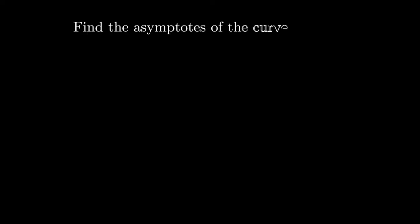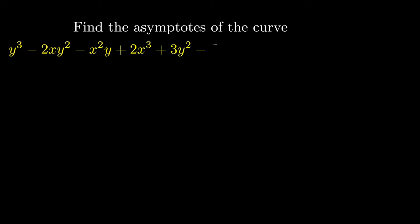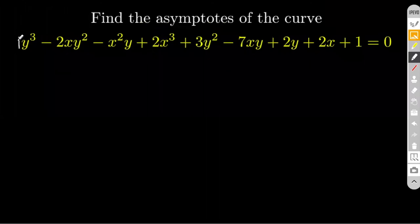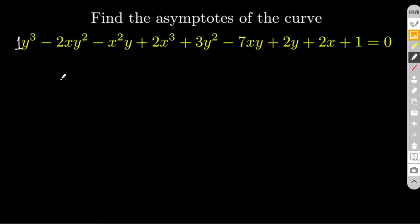Now friends, let's look at a scenario where there is a possibility of an inclined asymptote. The coefficient of the highest power of y, which is y³, is actually 1 — which is a constant. This signifies that this curve doesn't have a vertical asymptote. So one thing is for sure: there is no vertical asymptote.